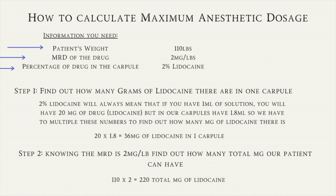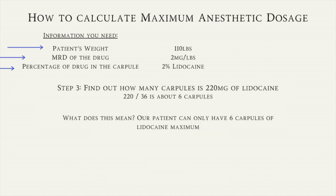Step two is knowing the MRD — the maximum recommended dose. In this case, the MRD is 2 milligrams per pound, and the patient weighs 110 pounds, giving a total of 220 milligrams of lidocaine maximum. Step three is finding how many carpules equal 220 milligrams. Since each carpule is 36 milligrams, we divide 220 by 36 and get 6 with a remainder. That remainder does not mean the patient can have 7 carpules — that would exceed the maximum — so we round down to 6. The patient can safely have 6 carpules.